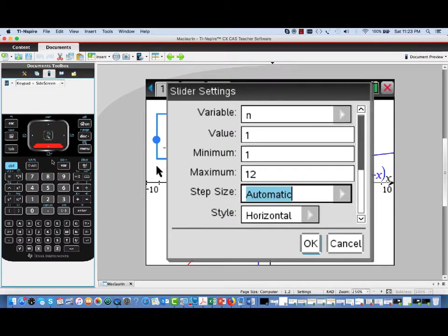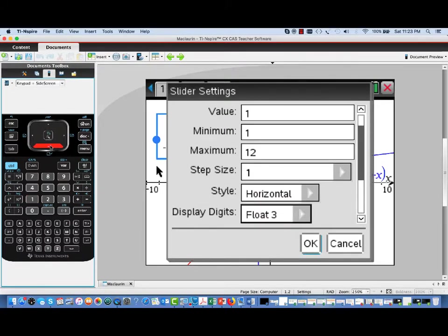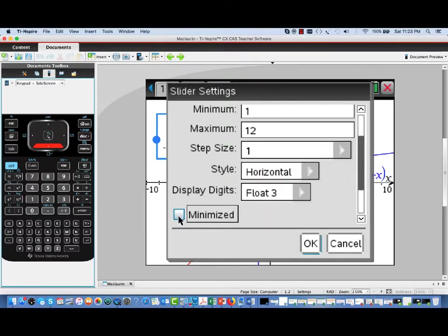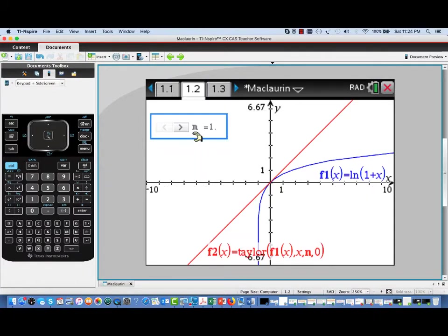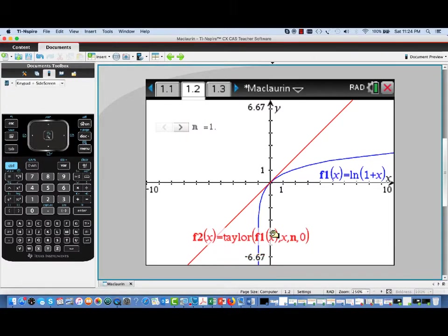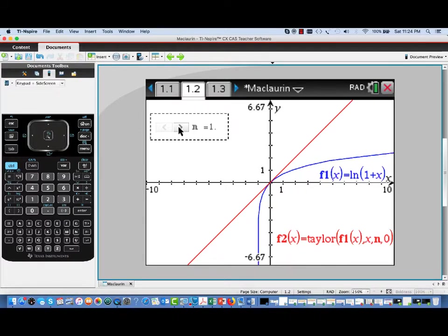Step size, we'll go in the integer steps. So we'll do step size of 1. And we'll just make it a minimize slider so it doesn't take up much room. There we go. We've got a little clicker slider now. And I'm going to move this label for our Taylor polynomial over here, a little bit out of the way. And you can see what we have right now is a first-degree Maclaurin polynomial.